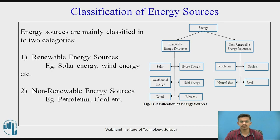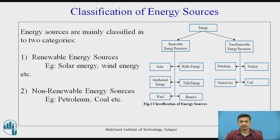First we will see the classification of energy sources. Energy sources are mainly classified into two categories. The first category is renewable energy sources. Examples of renewable energy sources are solar energy, wind energy, geothermal energy, tidal energy, hydro energy, and biomass.